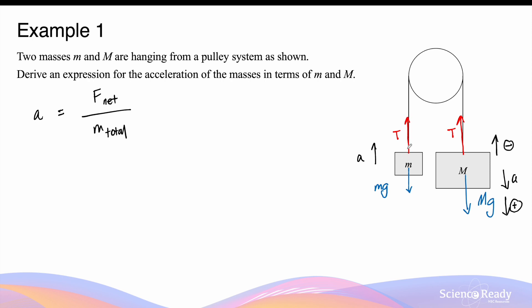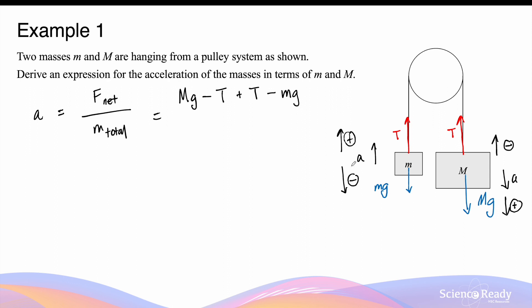Because smaller m is accelerating upwards, this gives a positive direction, which has to be consistent with the downward positive direction for big M. If the rope for the big mass goes down by 1 meter, then the rope tied to the smaller mass must go up by the same distance, 1 meter. Defining the downward direction for the heavier mass as positive means we also define the upward direction for the smaller mass as positive, so the downward direction for the small mass is negative. The net force on big M is the downward weight force (positive) minus the upward tension force (negative), plus the upward tension force on small m (positive) minus its weight force, smaller mg (negative).